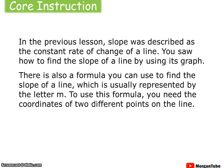In the previous lesson, slope was described as the constant rate of change of a line. You saw how to find the slope of a line by using its graph. There is also a formula you can use to find the slope of a line, which is usually represented by the letter M. To use this formula, you need the coordinates of two different points on a line.